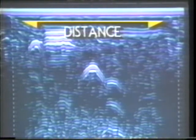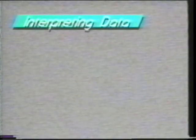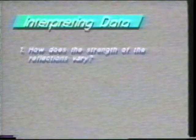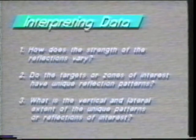Let's now look at a basic ground penetrating radar concept. The radar pulses enter the subsurface and reflect off interfaces or targets. On the records, the vertical axis is depth in time — later we'll learn how to convert this to feet or meters. The horizontal axis is distance traveled by the antenna across the area of investigation. When interpreting radar data, you'll be considering three characteristics: one, how does the strength of the reflections vary; two, do the targets or zones of interest have unique reflection patterns; and three, what is the vertical and lateral extent of the unique patterns or reflections of interest.